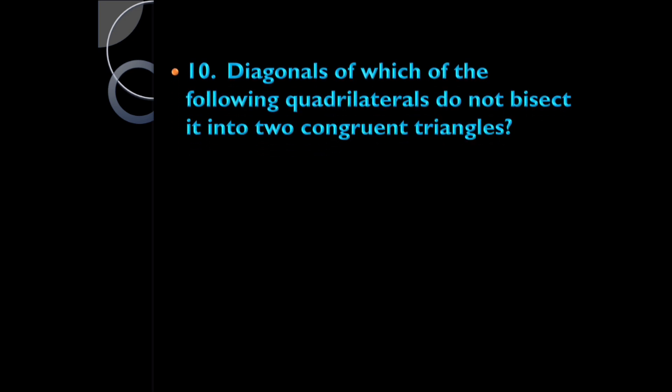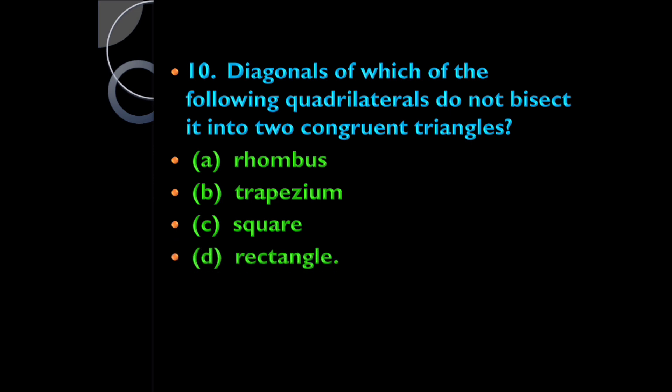Diagonals of which of the following quadrilaterals do NOT bisect it into two congruent triangles: rhombus, trapezium, square, or rectangle? It's a trapezium. In rhombus, square, and rectangle, the diagonal bisects the quadrilateral into two congruent triangles, but in a trapezium it does not. Hope you enjoyed learning — thank you!